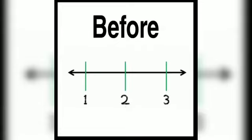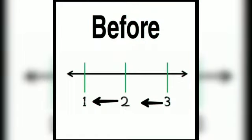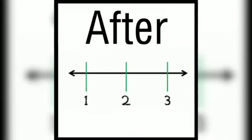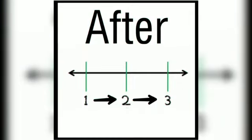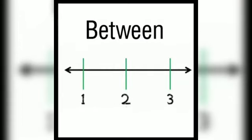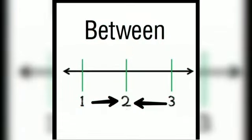Now tell me, which number comes before two and three? Two comes before three, and one comes before two. We can also say two comes after one, and three comes after two.